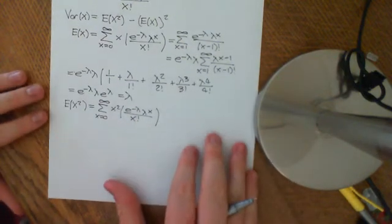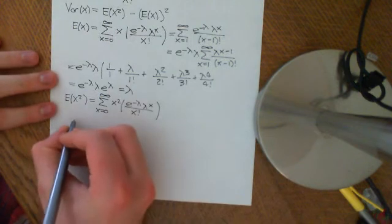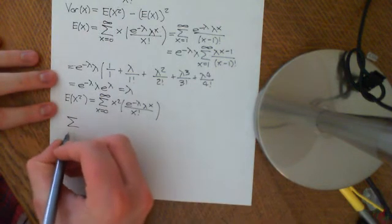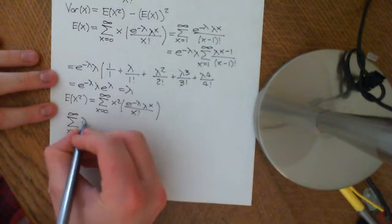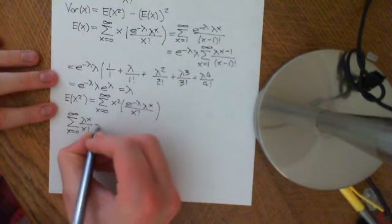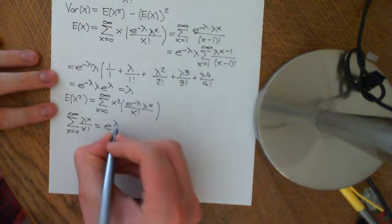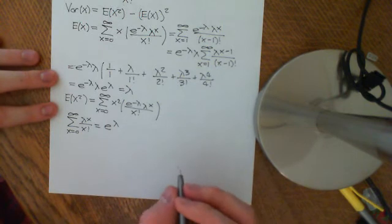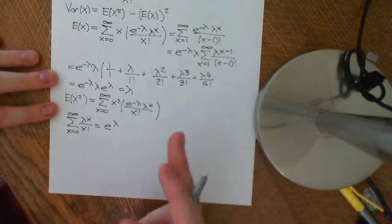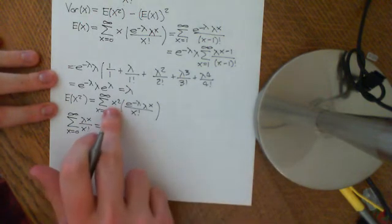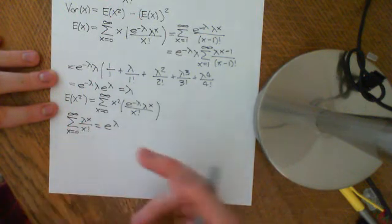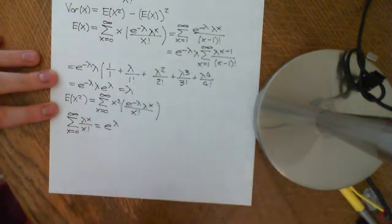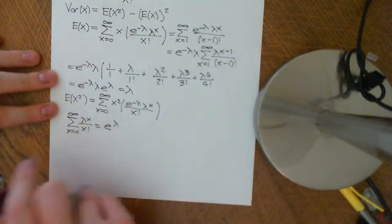We're going to have to apply a bit more clever analysis here. Let's start with something that we know: the sum from x equals 0 to infinity of lambda to the x over x factorial is equal to e to the lambda. Now, what about differentiating with respect to lambda? The motivation is that we want this x squared term — if we differentiate with respect to lambda, it pulls an x down to the front, using the fact that we can interchange the summation and the differentiation.